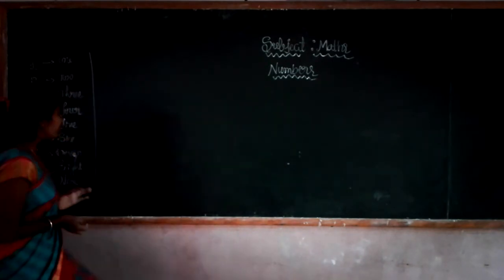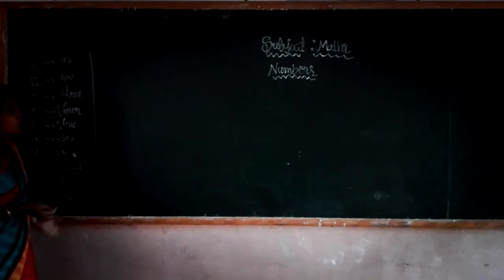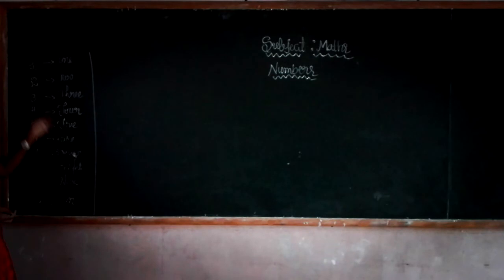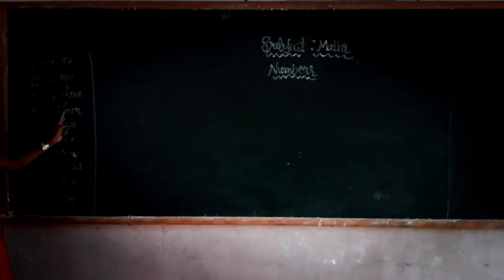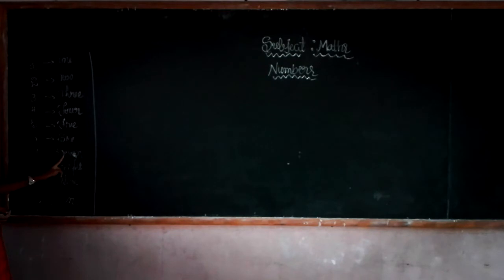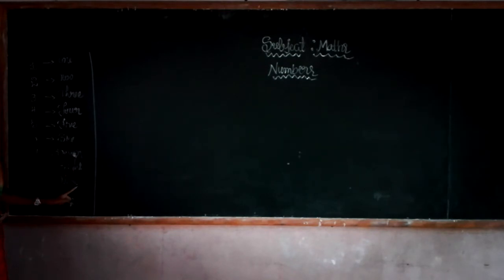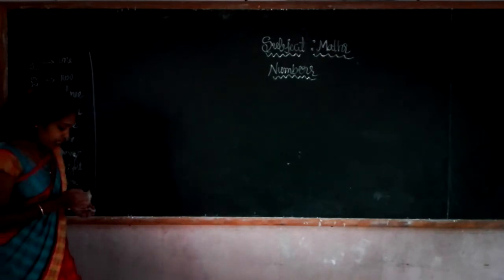Dear students, already you know very well the spelling of numbers from 1 to 10: ONE-1, TWO-2, THREE-3, FOUR-4, FIVE-5, SIX-6, SEVEN-7, EIGHT-8, NINE-9, TEN-10.